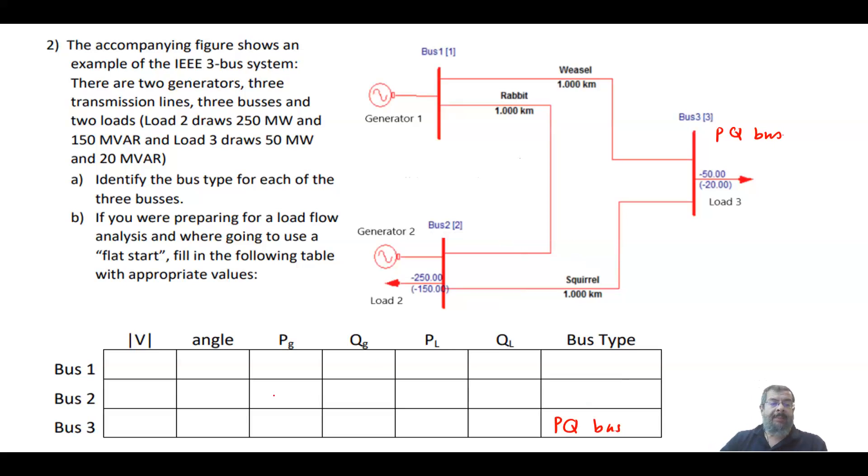Bus number two has a combination of a generator and a load. This is called PV bus, where you can control your voltage magnitude and you could have load or you may not have load as well. Finally, bus number one, we identify as the swing bus or the slack bus.